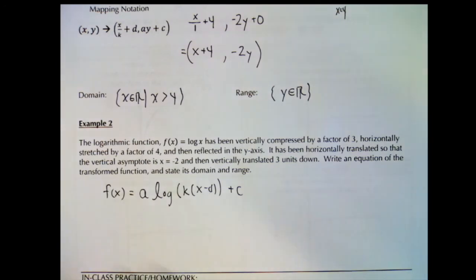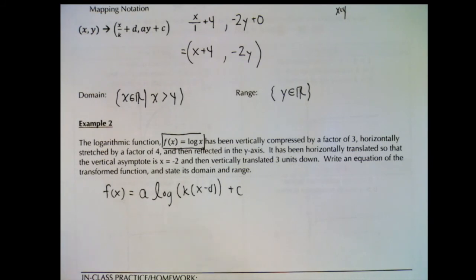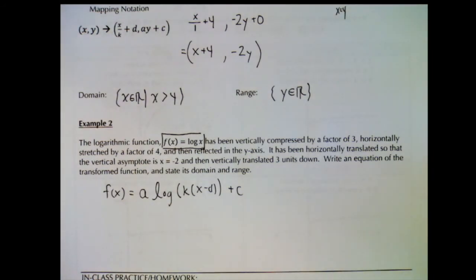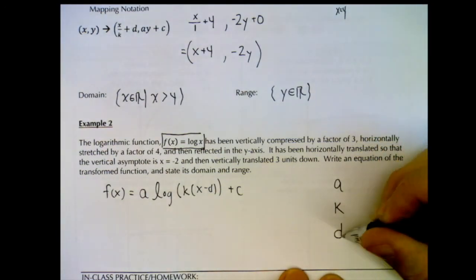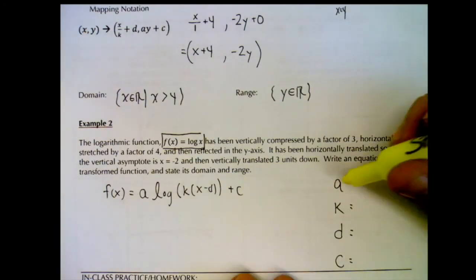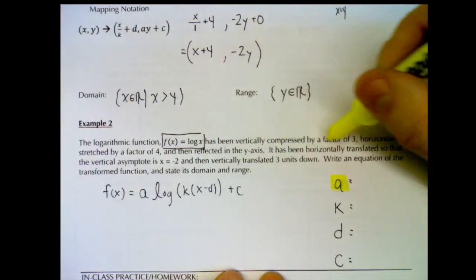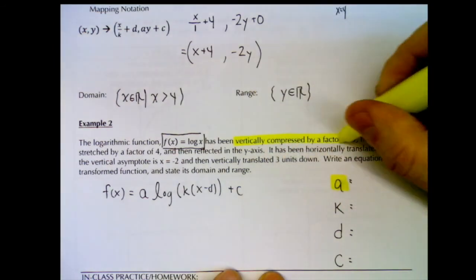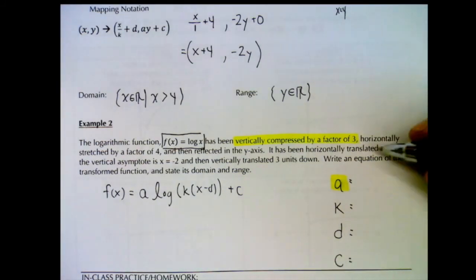Our logarithmic function has a parent function of the common log — log x, base 10. Reading through the description to pick out transformations: 'vertically compressed by a factor of 3' — vertical compression means a is between 0 and 1, so a equals one third. 'Horizontal stretch by a factor of 4' — that's a k value. 'Reflected in the y-axis' — a y-axis reflection means k is negative.